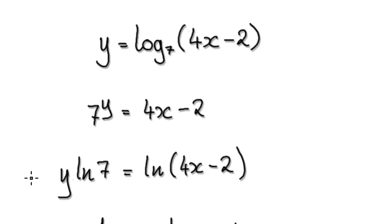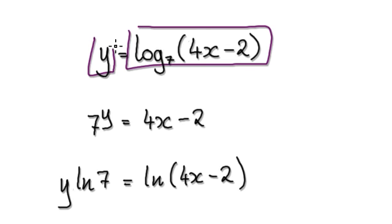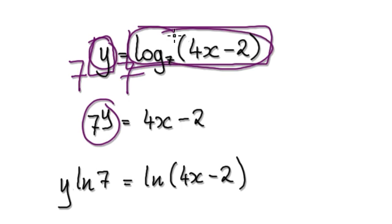Okay, so to do this, imagine this as being one block and this here as being another block. So now, exponentiate both sides with base 7. So that would be 7 to the power of y, and then 7 to the power of this whole thing here.